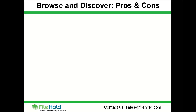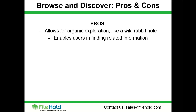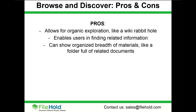There are pros and cons to the browse and discover process. One major pro is it allows for organic exploration — like a Wikipedia rabbit hole, where you look at one topic, hop to another, and eventually find yourself somewhere very different from where you started. That kind of exploration can be important for discovering knowledge within your DMS. It also enables users to find related information: you're looking for A, but you find B which is related to A. And it can show organized breadth of materials, like a folder full of related documents, where you can see those relationships automatically.